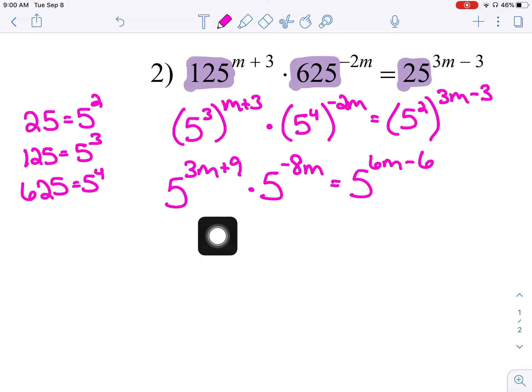On the left side, like bases, add the exponents. So, 5 to the negative 5m plus 9 equals 5 to the 6m minus 6.